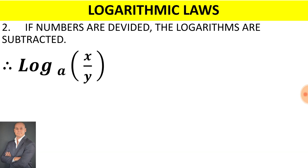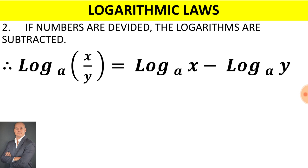For law number 2, if numbers are divided, the logarithms are subtracted. Therefore, log base a of (x over y) can be rewritten as log base a of x minus log base a of y.